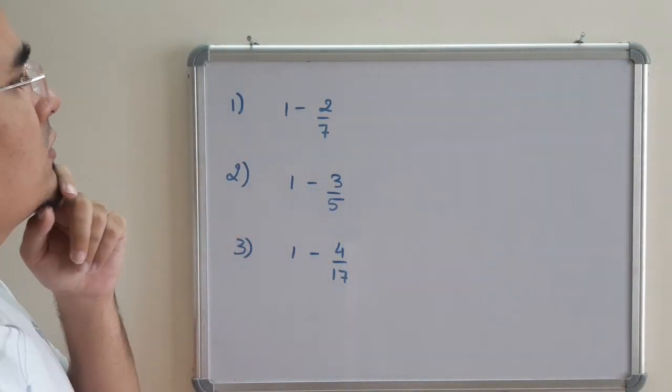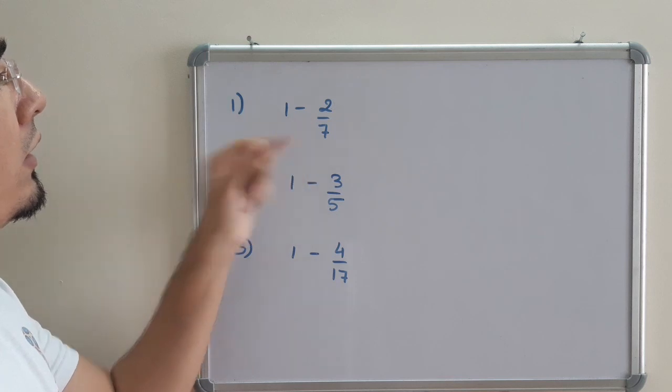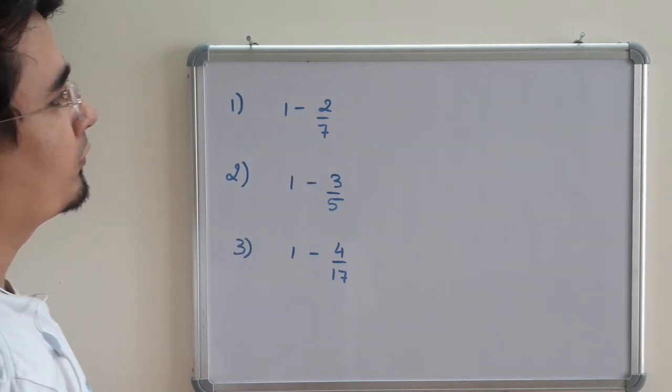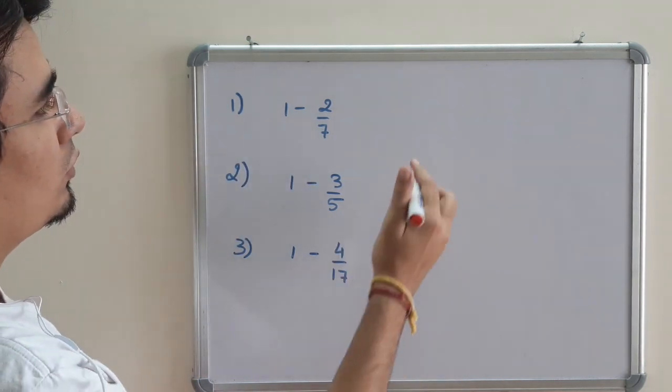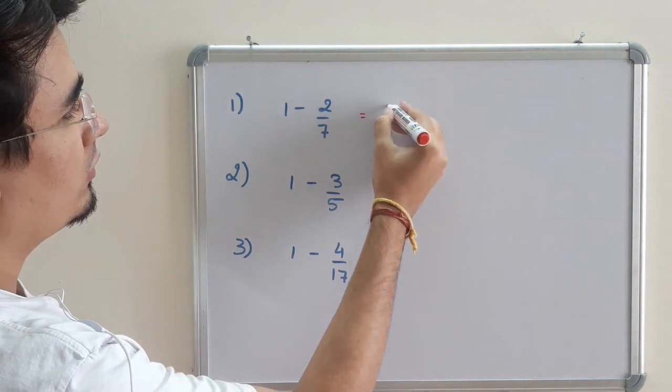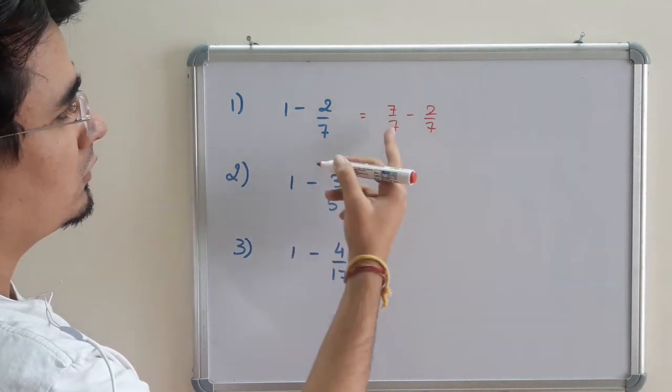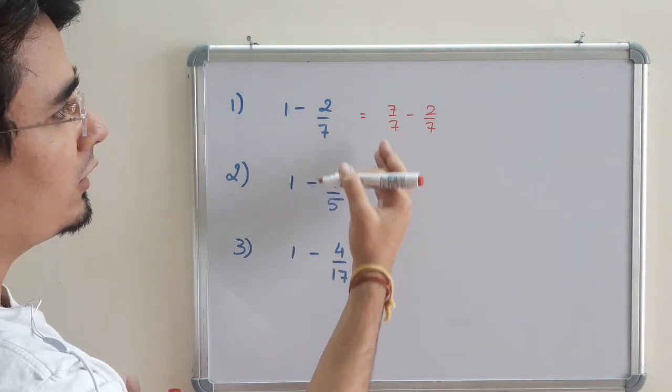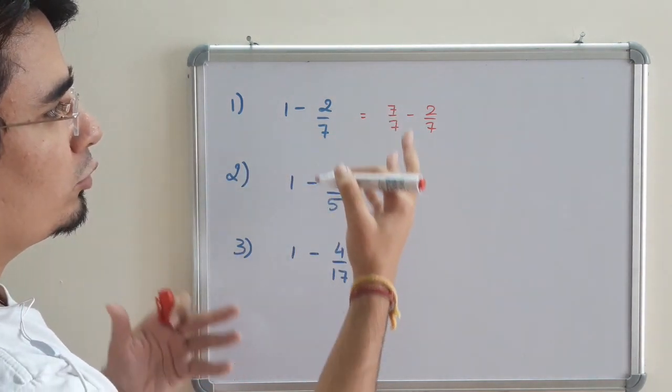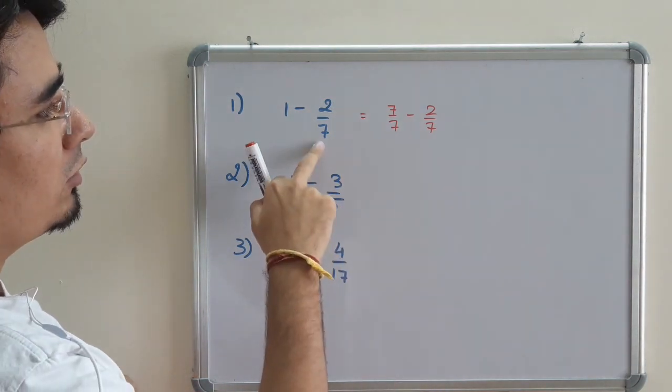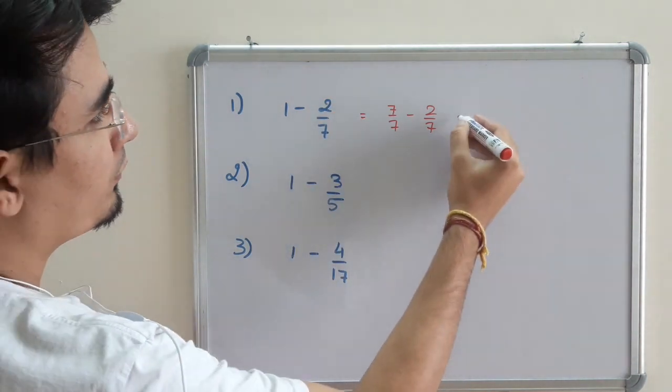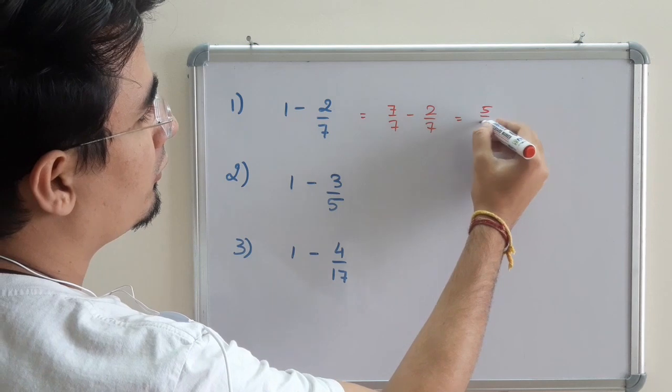So 1 minus 2 by 7. This is 1 whole and this is a proper fraction. So 1 can be considered as a whole and I can divide it into 7 equal parts. 7 by 7 is nothing but 1. So I can write it anyway - 7 by 7, 2 by 2, 3 by 3. So whatever the denominator is I can write it that way. So I will be getting 5 by 7.